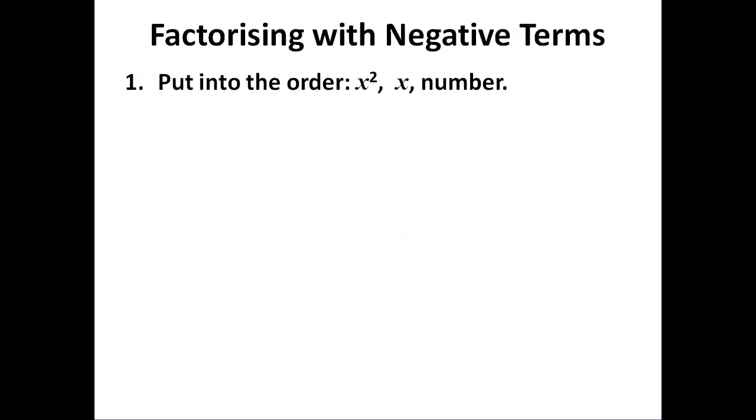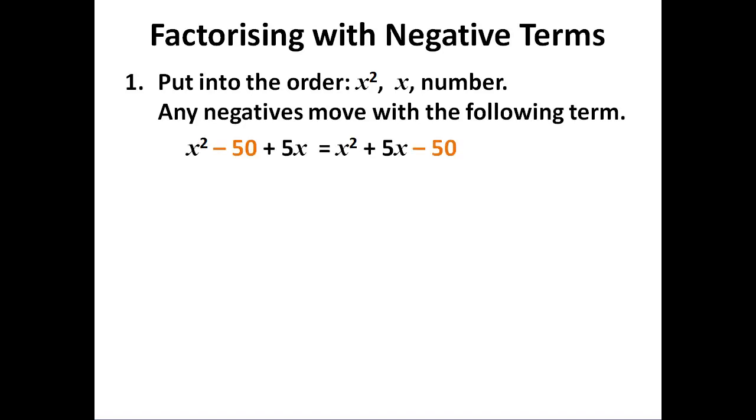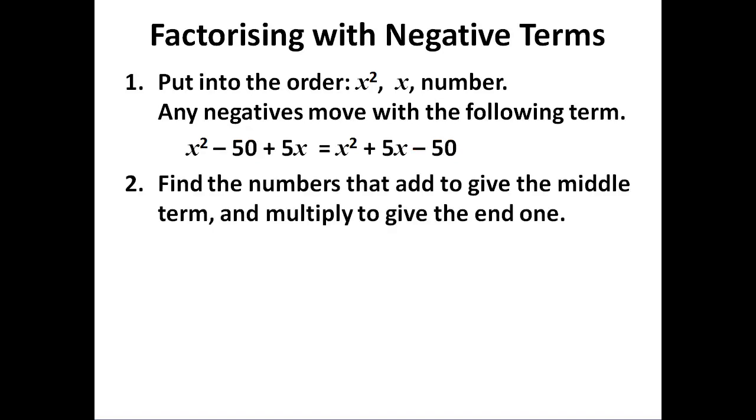If there is a negative, we proceed the same way. Put them into the order, keep the negative with the term it goes with. So in this case the minus stays with the 50 when I rearrange it. We still find the numbers that add to give the middle term, multiply to give the end one. It's just that at least one of them will be negative.